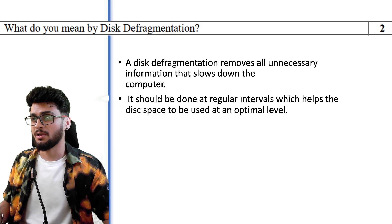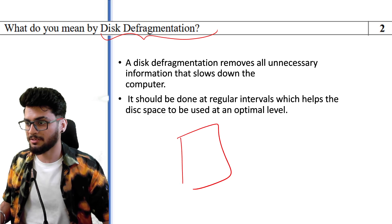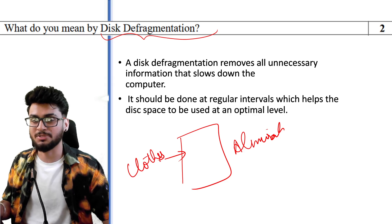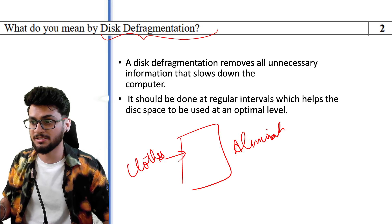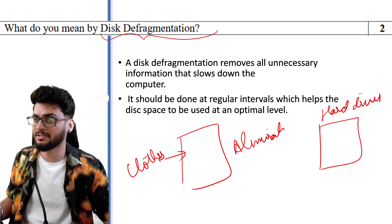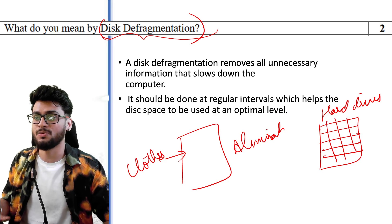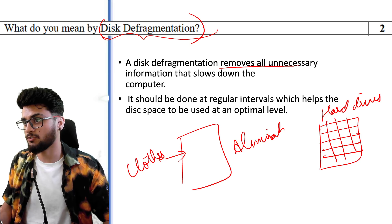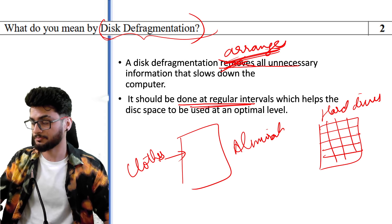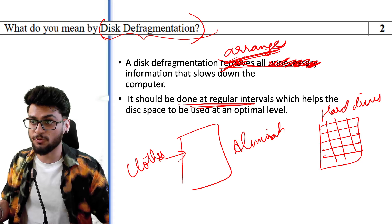'What do you mean by disk defragmentation?' Many videos on YouTube and even the CBSE sample paper have the wrong definition. Let's imagine you have a wardrobe with a lot of clothes all jumbled up — when you want to remove your shirt it's very difficult to find it, so your speed is slow. The same happens inside your hard drive when all your files are fragmented. You use disk defragmentation so that everything is arranged properly and you can extract files quickly. It arranges information — it does not remove unnecessary information. It should be done at regular intervals.